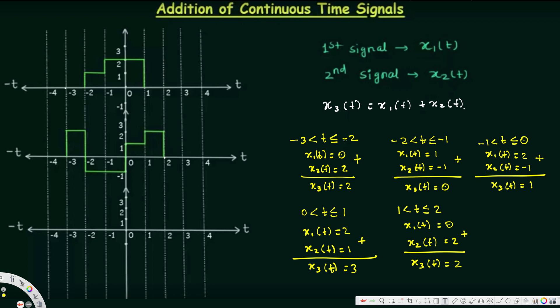In the new graph, from negative 3 to negative 2 we are going to have 2. From negative 2 to negative 1 it's 0. From negative 1 to 0 it's going to be 1. And then from 0 to 1 we are going to have 3.